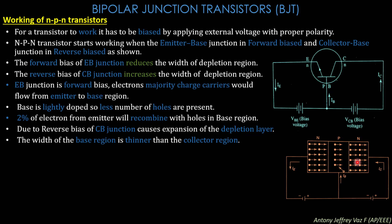The expansion of the depletion region makes the base region thinner. The forward bias voltage causes electrons — the minority charge carriers in the emitter — to flow into the base region. Since the base is lightly doped with very few holes, only 2% of electrons from the emitter are captured by the base region. The remaining electrons are attracted by the reverse-biased VCB battery voltage into the collector region.